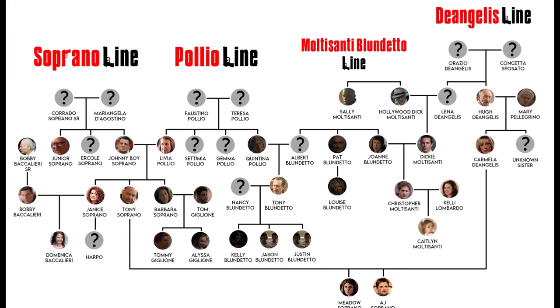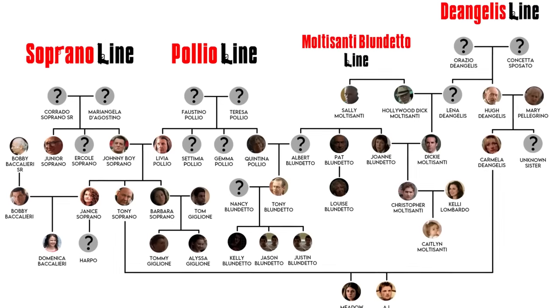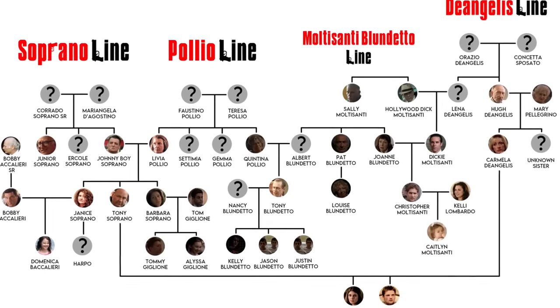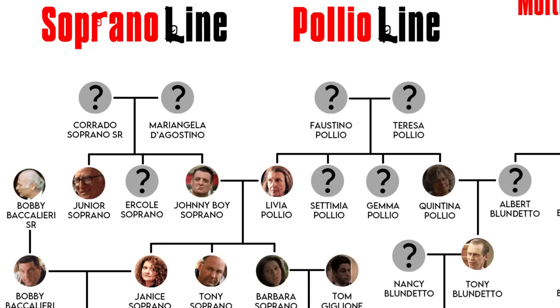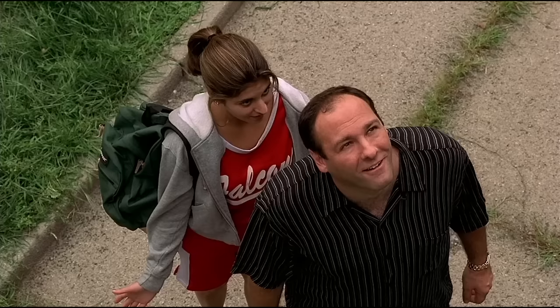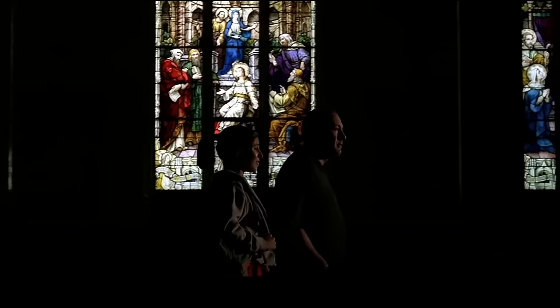There are four main family lines: the Sopranos, the Polios, the Moltisanti-Blundettos, and the DeAngelis lines. Let's start of course with the Sopranos. The tree begins with Corrado Soprano Sr. The family goes back even further to Avellino with the ancestor that drove the mule cart off the road, but this is the oldest family member we have a name for. We don't know anything about the mother Mary Angela, but Corrado Sr. was a master stonemason who built the Italian church that Tony takes Meadow and AJ to.